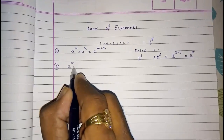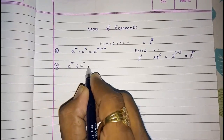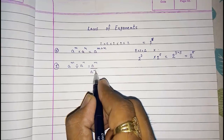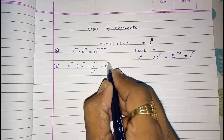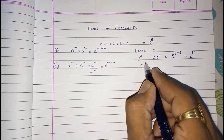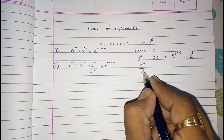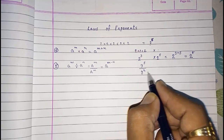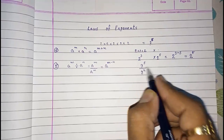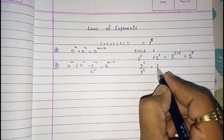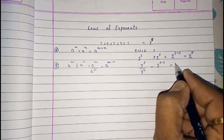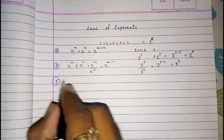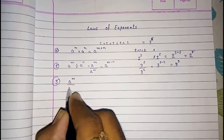The second law: a raised to m divided by a raised to n — we subtract the powers to get a raised to m minus n. For example, 3 raised to 5 upon 3 raised to 2: writing 3 multiplied five times in the numerator and two times in the denominator, we cancel two 3s, leaving three 3s. So directly we write 3 raised to 5 minus 2, which equals 3 raised to 3.